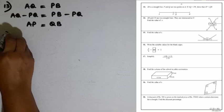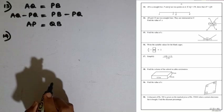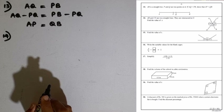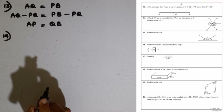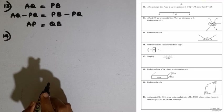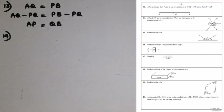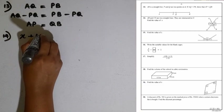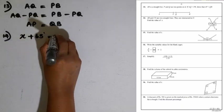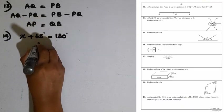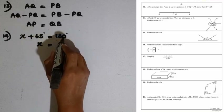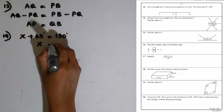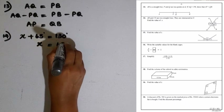Question number 14: AB and CD are two straight lines intersected at O. Find the value of x. There is a pair of vertically opposite angles formed here, so we can write x plus 65 degrees equals 130 degrees. Therefore x equals 130 minus 65, which is 65 degrees.